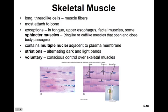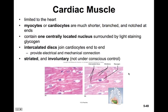Skeletal muscles are voluntary, meaning we have conscious control over those muscle movements. Cardiac muscle is limited just to the heart. The muscle cells are called cardiocytes — they're much shorter and branched, notched at each end, and contain one centrally located nucleus. These cells are joined by intercalated discs, which allows electrical stimulation to pass from one cell to the other. They are also striated but involuntary. So the big difference: cardiac muscle has branched cells, one nucleus, and is involuntary, whereas skeletal muscle has multiple nuclei, is much larger, not forked, and is purely voluntary.